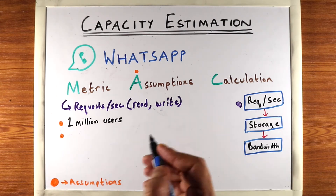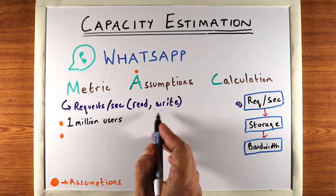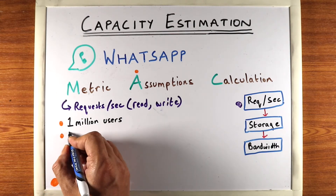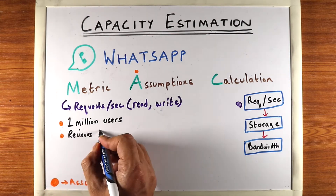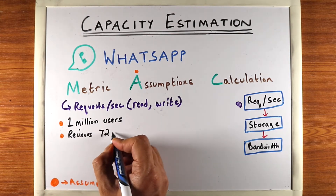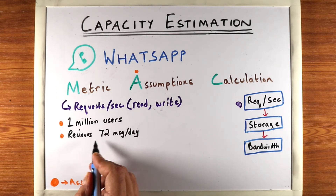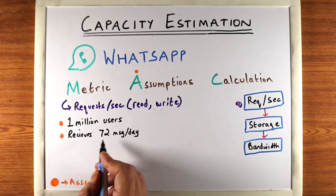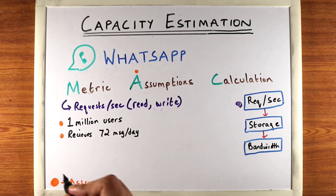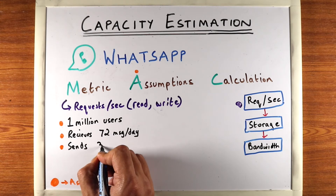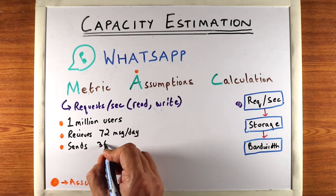So let's separate out reads and writes. Let's say that a user receives 72 messages per day — and you'll notice I picked 72 for a reason that we'll go over later. And let's say the user sends 36 messages per day.